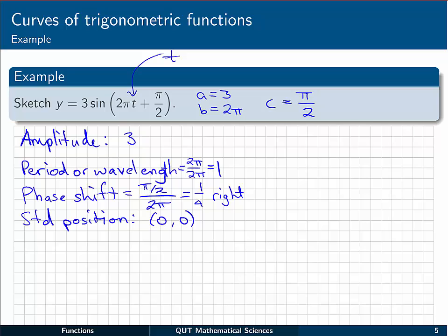OK, so the way to do this is just to identify from the function that a is 3, b is 2π, and c is π/2. That will then let us write down that the amplitude is also 3, the absolute value of 3. The period, or the wavelength of the function, is going to be 2π divided by 2π, because b is 2π, so that's just 1. The phase shift is going to be 1/4 to the right, and the standard position, because this is a sine curve, would be (0, 0) crossover.